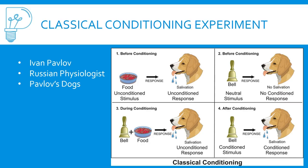Moving to step three, you see the bell and the food together. Eventually the dog learns there's food coming and starts to salivate, associating the food with the bell. This process is called pairing, and it can take 10 or 100 iterations. By step four, you can remove the food entirely and the dog will still salivate — its brain pairs the bell with food, so when it hears the bell it remembers food is coming. This is classical conditioning.